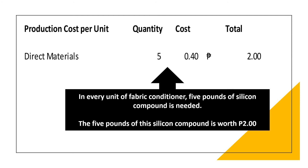Now we are going to get the information from the direct materials budget. In every unit of fabric conditioner, 5 pounds of silicon compound is needed, so the quantity needed here is five, and the cost for the silicon compound is 40 centavos each — so for each fabric conditioner, it costs 2 pesos for the silicon compound.